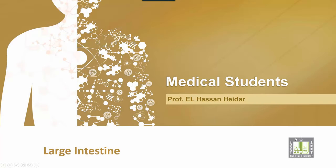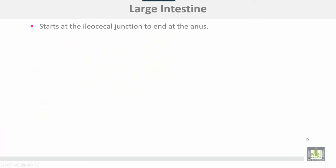Large intestine. The large intestine starts at the ileocecal junction and ends at the anus. It is formed by four parts: cecum, appendix, colon, and rectum.